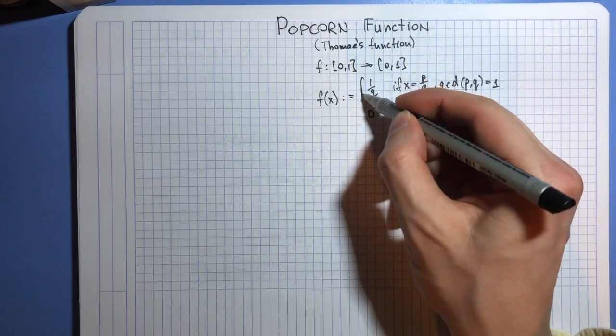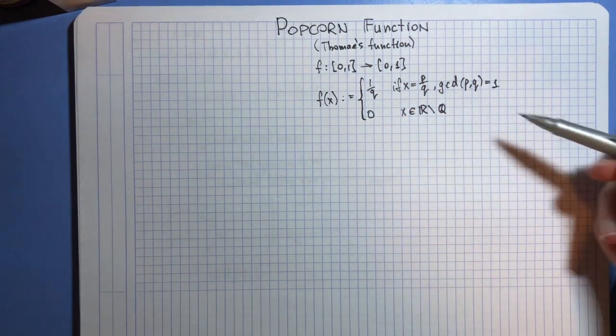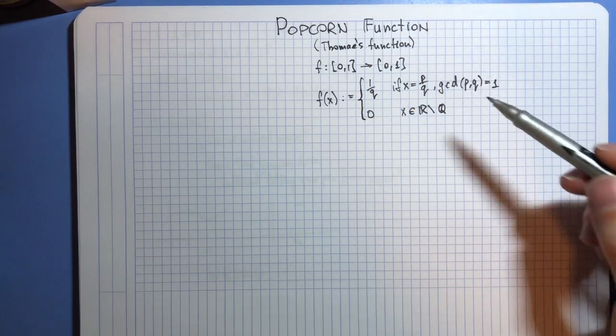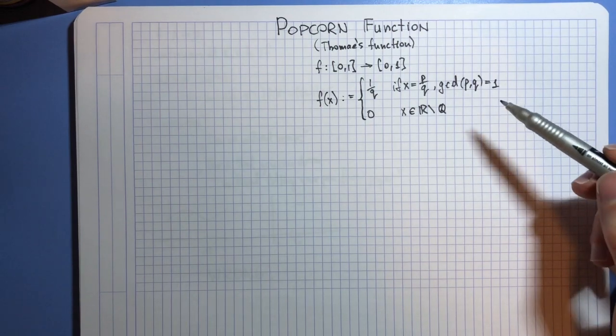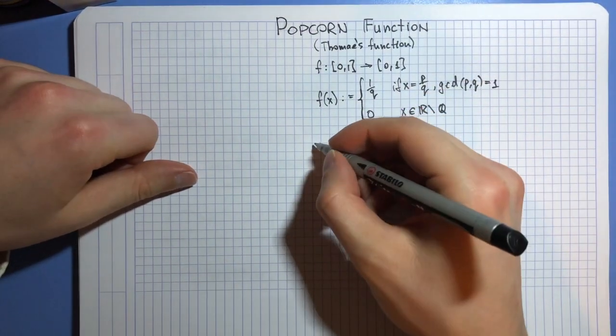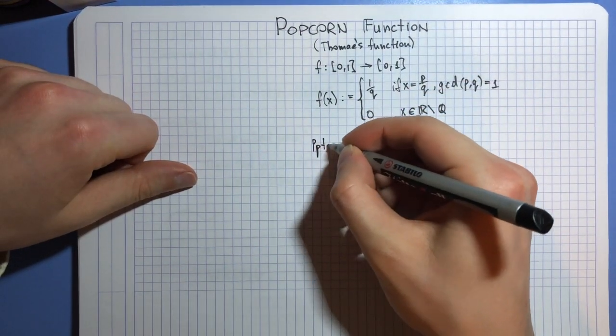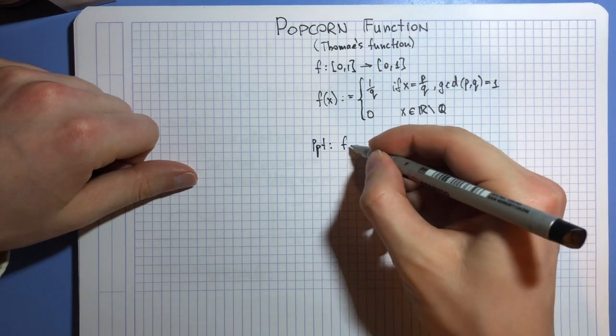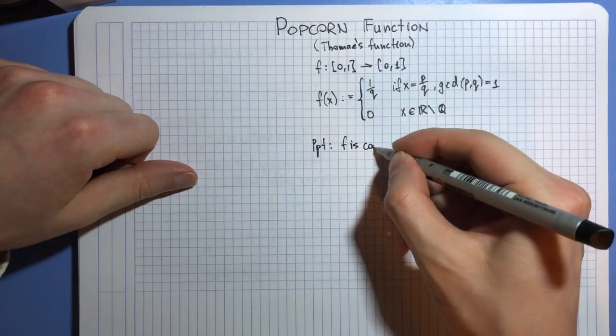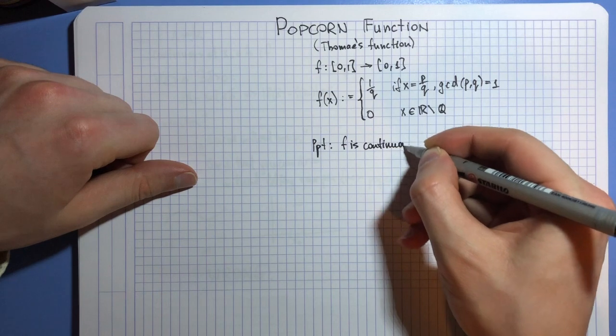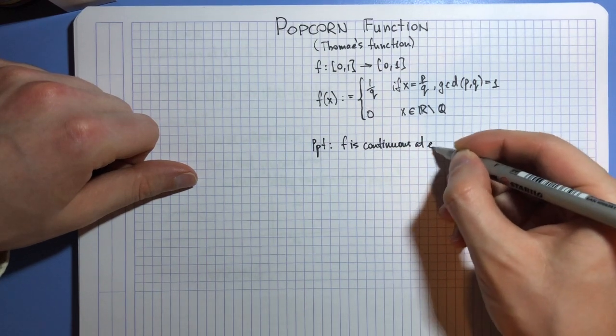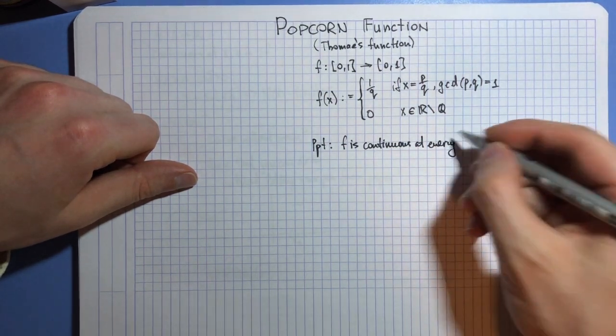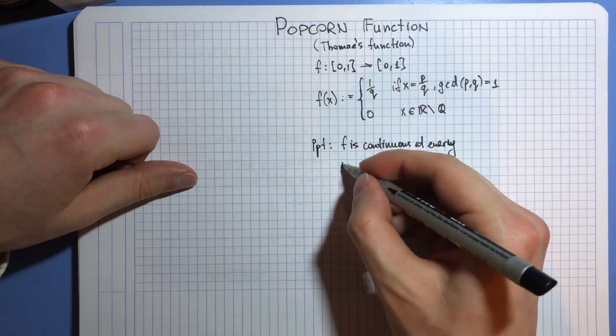This construction looks very similar to that of Dirichlet function, but it has a weird property. It turns out that f is continuous at every irrational point.